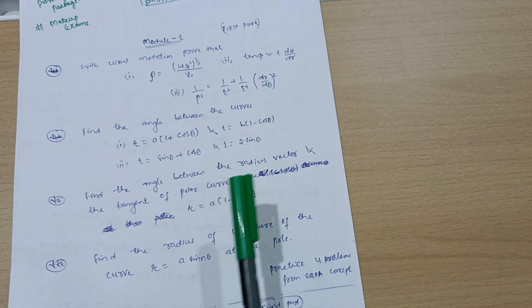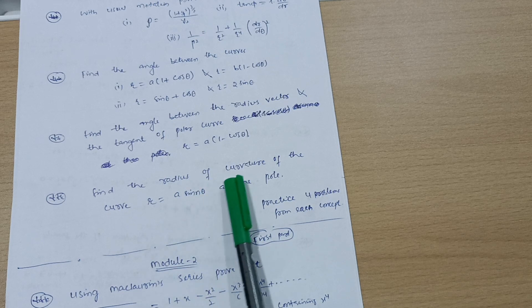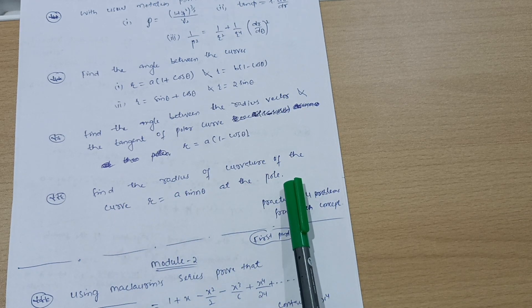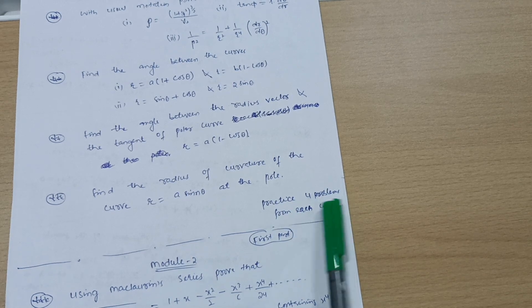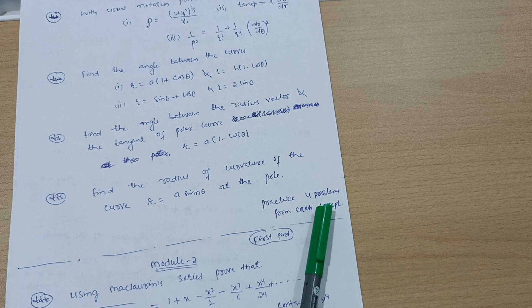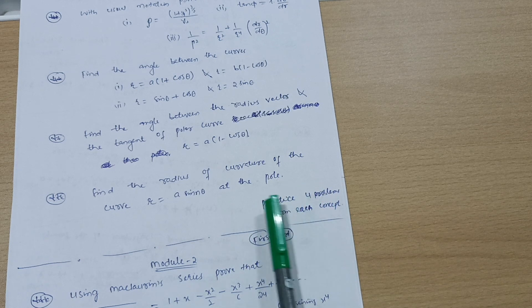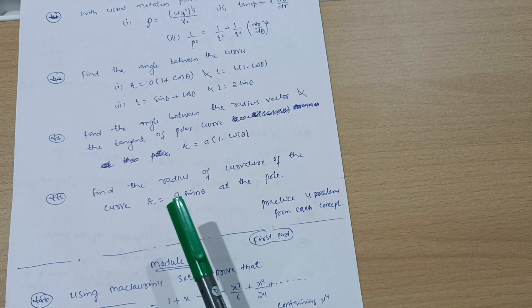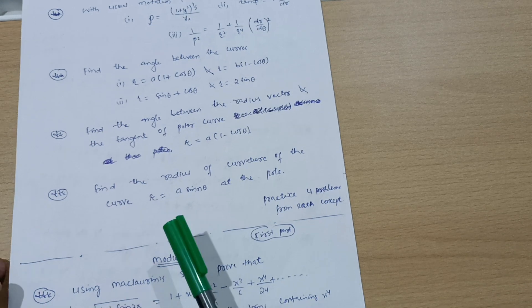Next is find the radius of curvature of the curve r equals a sine of n theta at the pole. I have written here practice four problems from each concept. At least you should go through, I am taking minimum case. Your main focus should be on practicing varieties of problems. This is all about Module 1, you can easily leave its second part.